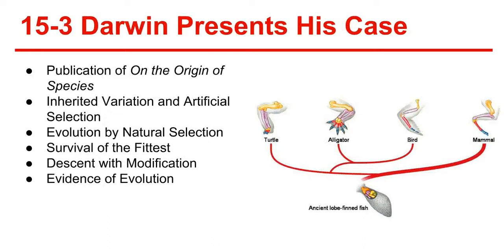15-3: Darwin Presents His Case. The publication of On the Origin of Species — his hypothesis — was not published until 1859, after he received an essay from Alfred Russell Wallace, a fellow naturalist who had been doing field work in Malaysia. Wallace's essay summarized thoughts on evolutionary change that Darwin had been mulling over for more than 25 years. Soon after receiving this essay, Darwin published On the Origin of Species. One of Darwin's most important insights was that members of each species vary from one another in important ways, and that variation existed in nature and on farms.